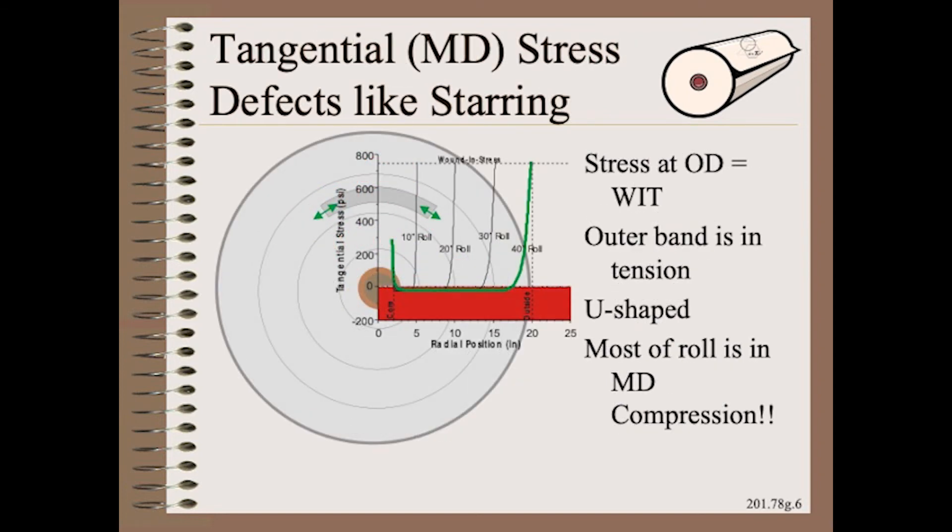The MD tension inside a wound roll can easily explain why starring results. Here, the tension at the current outside of the roll is the wound in tension. However, just beneath that top, you will find that the tension is less. That is because the pressure of the layers above it causes the roll to collapse slightly. That moves layers underneath towards compression. Further down into the roll, there is less and less tension. And very quickly, the layers are likely to be in machine direction compression.